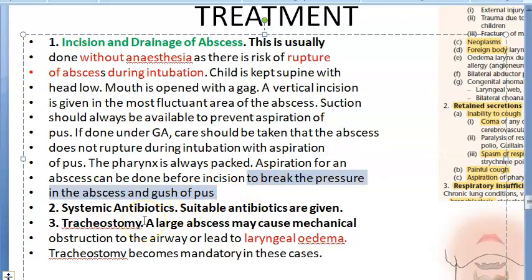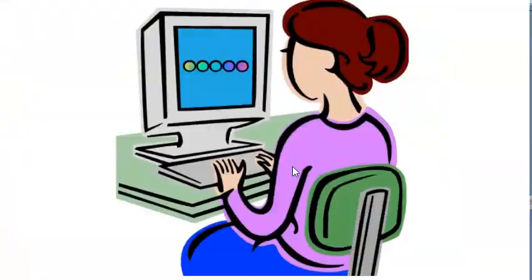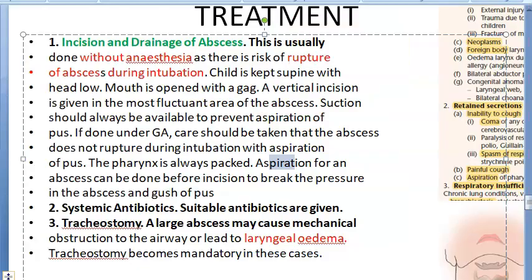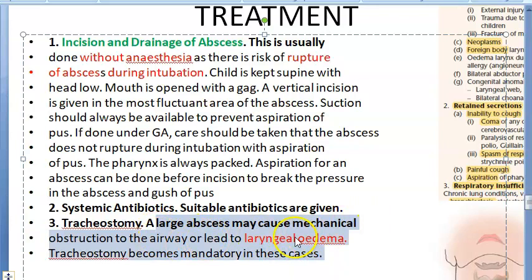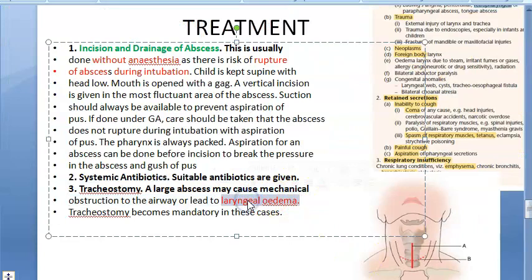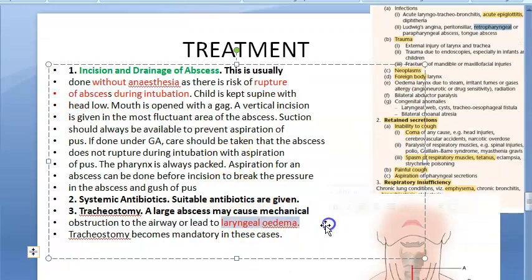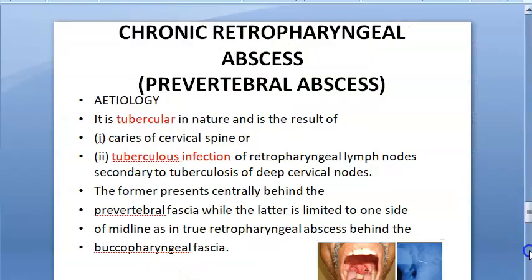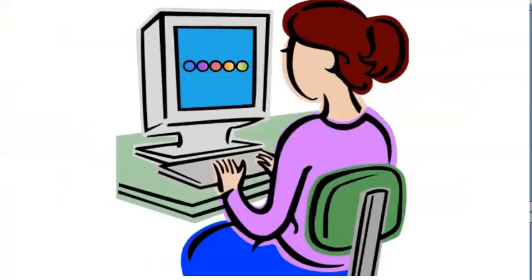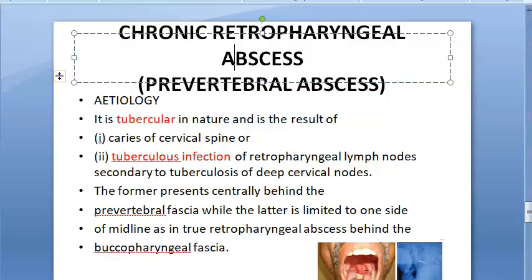Aspiration of the abscess contents can be done before making a formal incision, to relieve pressure and prevent a gush of pus. Antibiotics are given as usual. Tracheostomy may be required if there is respiratory obstruction due to laryngeal edema — this is one of the indications for tracheostomy in retropharyngeal abscess.